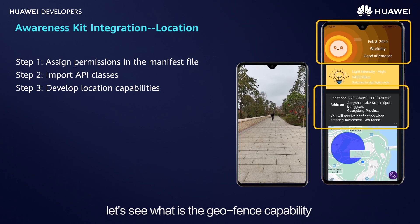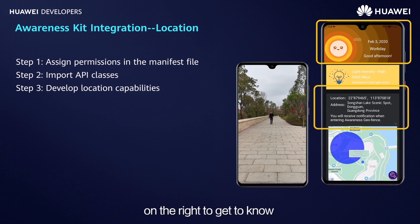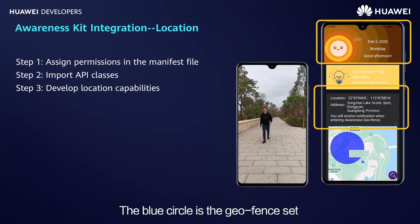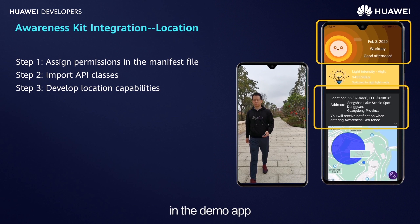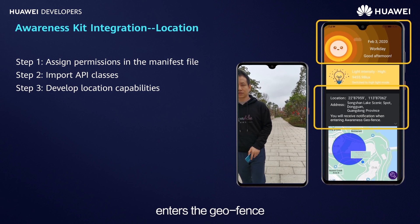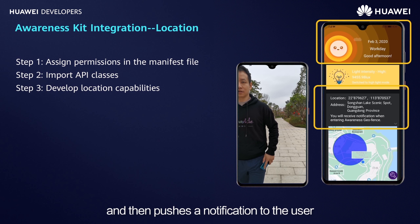Next, let's look at the geofence capability of Awareness Kit. The blue circle in the demo video is the geofence set in the demo app. When a user with a mobile phone enters the geofence, the demo app detects the user inside the geofence via Awareness Kit and then pushes a notification to the user.